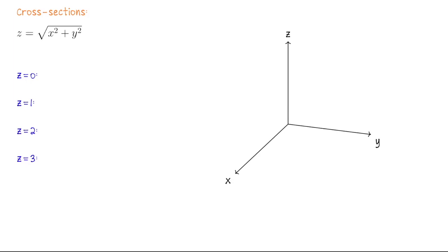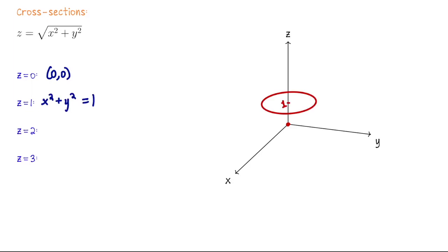Now let's look at a similar equation: z equals the square root of x squared plus y squared. Again, let's go through a few cross sections for z, and then we'll also do the x equals 0 and y equals 0 cross sections. When z equals 0, we need x squared plus y squared to be 0, so that's just the origin in the xy-plane. When z equals 1, x squared plus y squared equals 1, so we're looking at the unit circle in the plane z equals 1. So far it's the same as the paraboloid cross sections, but now it's going to be different.